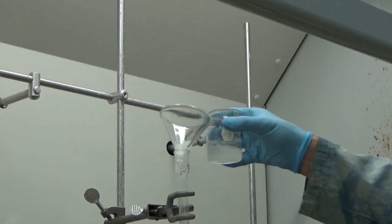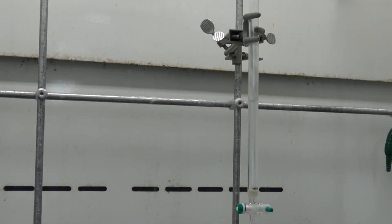Having done that, I'm going to hold it to the column, swirl, and immediately pour to be sure that I get some silica in there along with the dichloromethane.